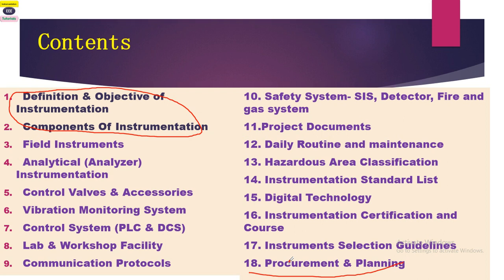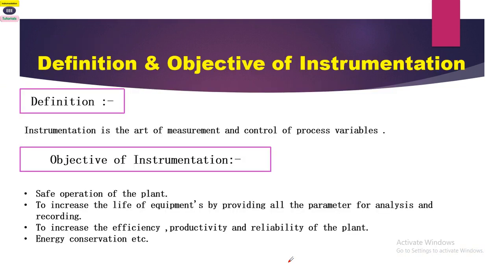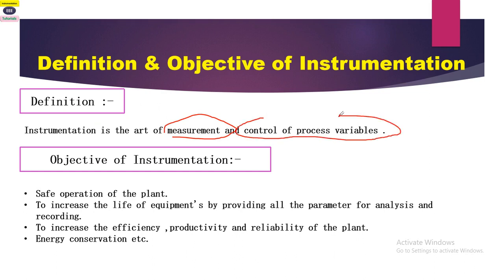Let us start the first part. The first definition of instrumentation: instrumentation is the art of measurement and control of process variables.